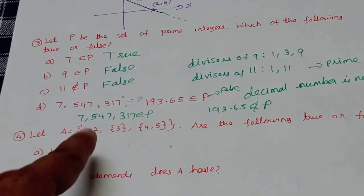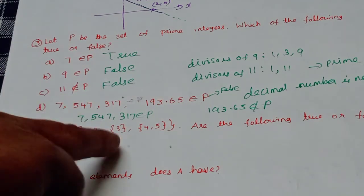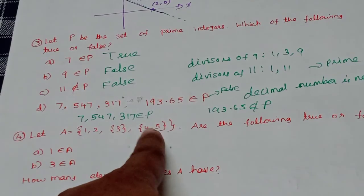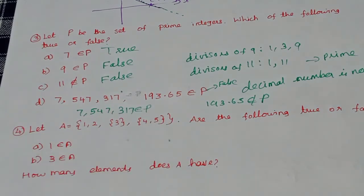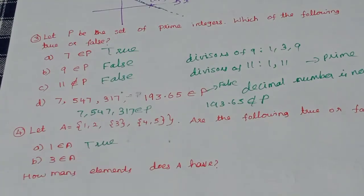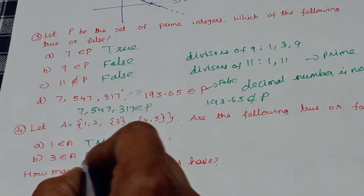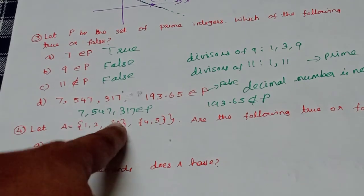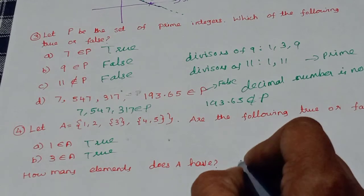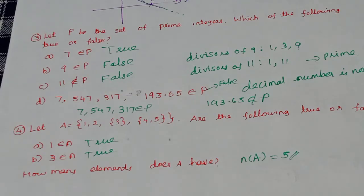Now let's look at a set with elements: 1, 2, 3, 4, 5. True or false: 1 belongs to A — yes, 1 is in the set, so true. 3 belongs to A — yes, true. How many elements does A have? There are 5 elements — 1, 2, 3, 4, 5. The cardinality n(A) equals 5.